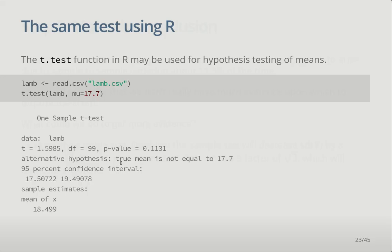We don't do this with pen and paper of course — we use a computer. The t-test command, which we've already seen for confidence intervals, also gives us the p-value if we specify the claimed mean. Here we read in the lamb data with a claimed mean of 17.7 kilos, and sure enough it works out the mean of 18.5, gives the confidence interval, and gives the p-value and t statistic of 1.6 that we computed by hand.